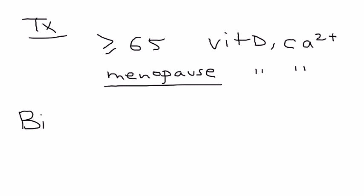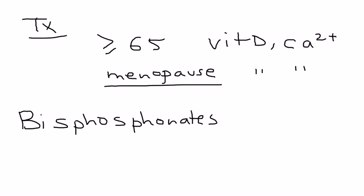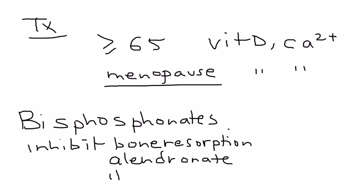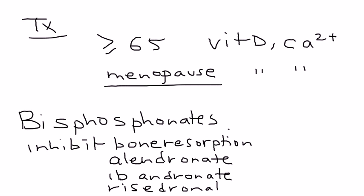The osteoporosis medications are known as bisphosphonates. They inhibit bone resorption and are important in preventing further bone loss. Interestingly, they're one of the few medications that don't have to be taken once a day. The most common is alendronate, which is given once a week.